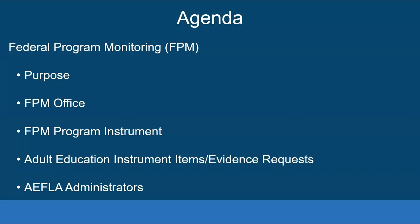Our agenda for the presentation is to describe what federal program monitoring is. I'll talk about its purpose, why we do it, and I'll talk about the FPM office. There are many different offices here at the Department of Education — the Adult Education Office, for example — and the FPM office. We'll talk about their role and the Adult Ed instrument.